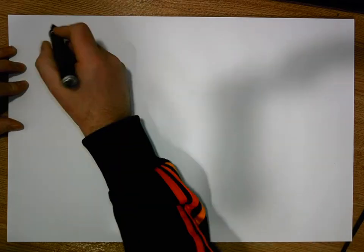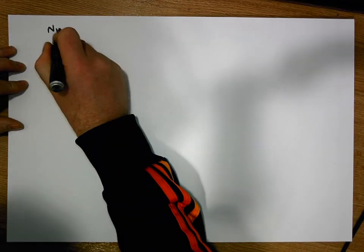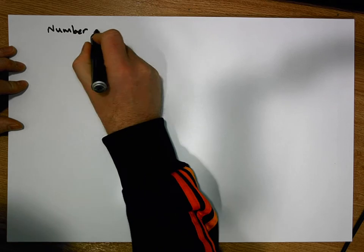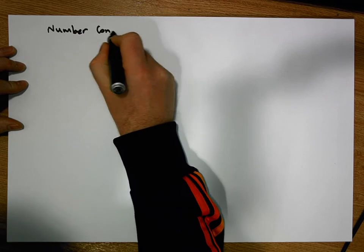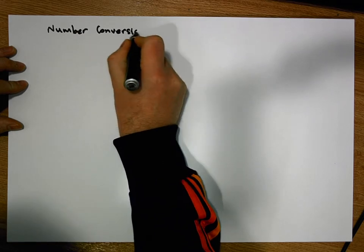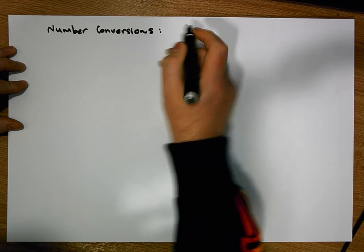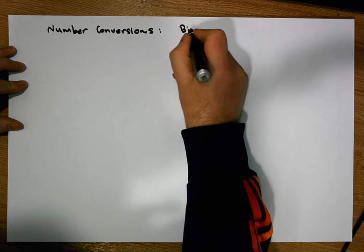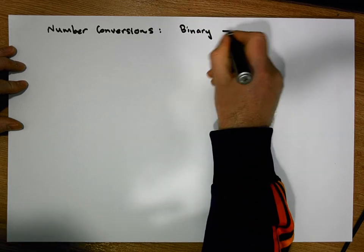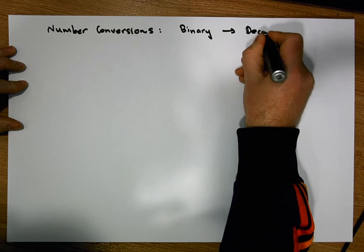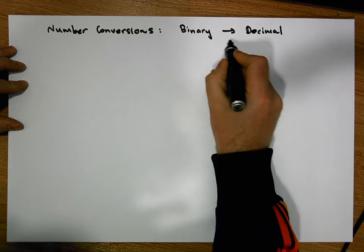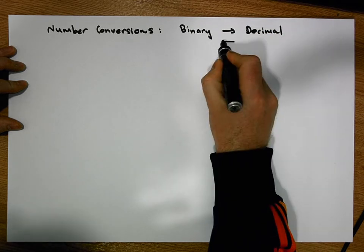Hi guys, this is Jonathan Lambert with the Mathematics Development and Support Service at the National College of Ireland. This short video is going to consider number conversions, specifically converting binary numbers to decimal numbers and back again.